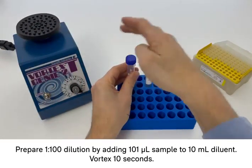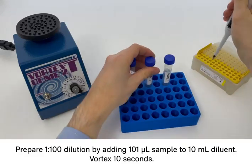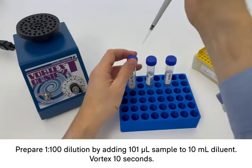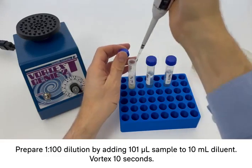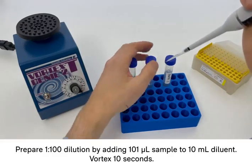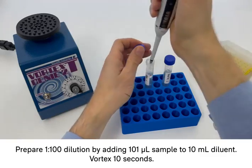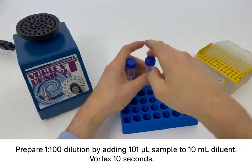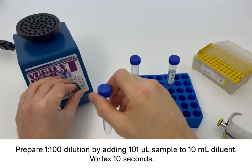After the sample has been homogenized, I make the 1 to 100 dilution by adding 101 microliter to the 10 mL of diluent in the tube. Here we go. And then I vortex again, this time for 10 seconds.